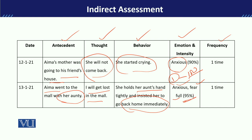Her anxiety was reported at 95%. This means that Ima's emotions — the anxiety she felt and the fear she felt — had very high intensity. The frequency of all these events was once a week, but if we keep monitoring over a month, we will see that this frequency keeps increasing with different types of events.